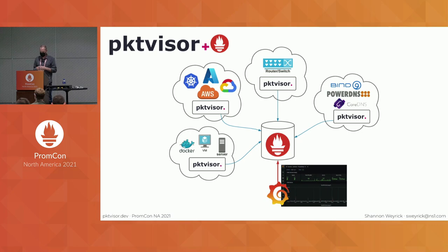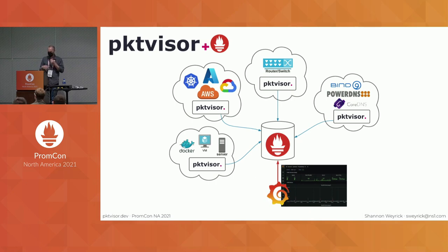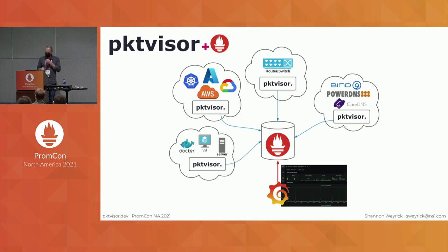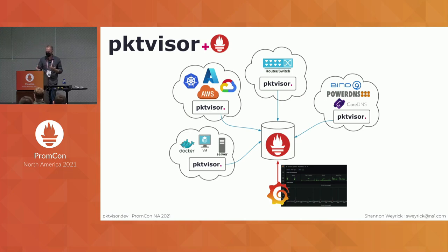Packetvisor agents can be installed in multiple locations in hybrid topologies — it's a sidecar agent style that can run in containers, VM servers, and we've started putting this directly onto routers and switches. The idea is to pull this information into a Prometheus database and set up your tools to get the broader view.